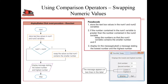What we do is store the values of the numbers in the textbox in two variables - num1 for the first textbox and num2 for the second textbox. Then we compare if num1 is greater than num2. If num1 is less than num2, then we don't do anything other than displaying num1 in the first line and num2 in the second line.